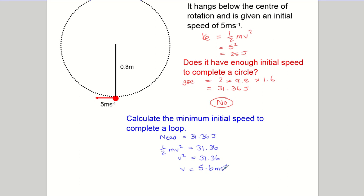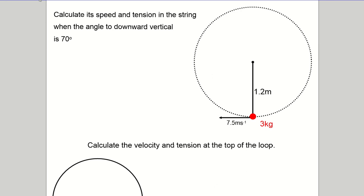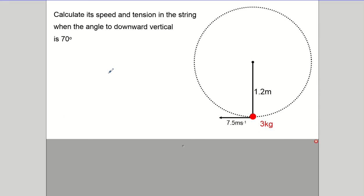With a rod, if the particle comes to an absolute stop at the top, the rod supports the particle's weight and it just rests there until somebody gives it a nudge. On a string, it would just fall straight down — that's the key difference between a rod and a string. The second question is trickier: a three-kilogram mass given an initial velocity of 7.5 meters per second on a 1.2 meter radius string. Initial kinetic energy is half times 3 times 7.5 squared, giving 84.375 joules.